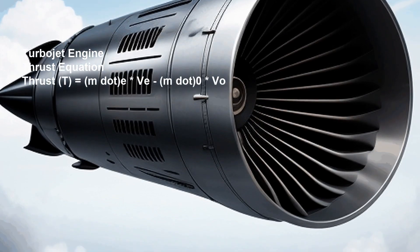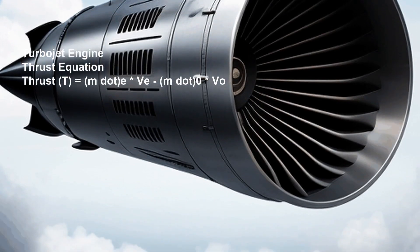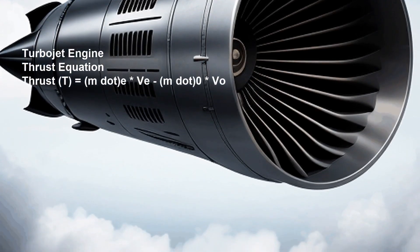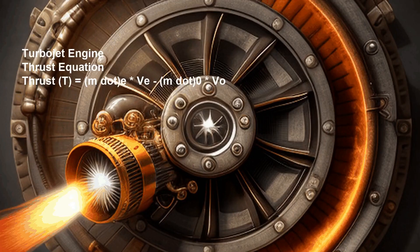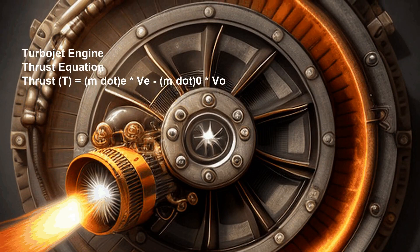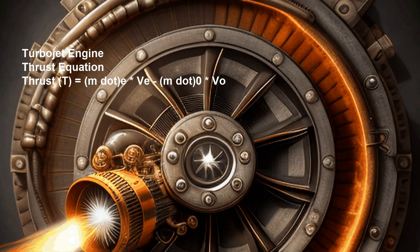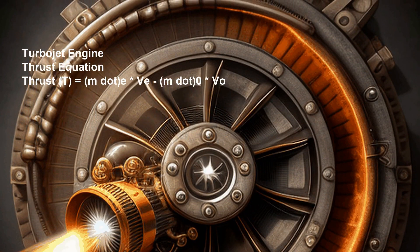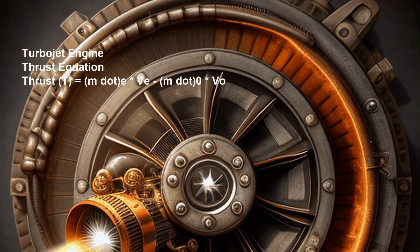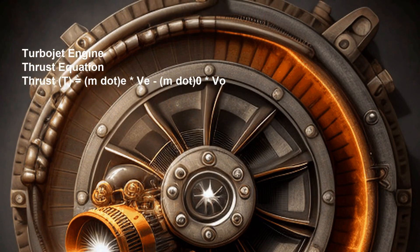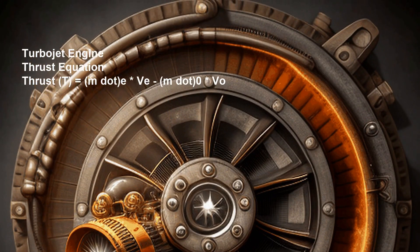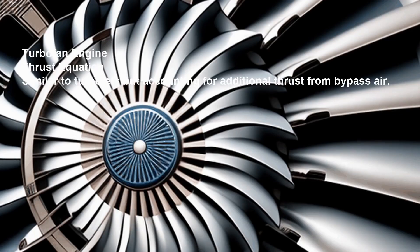Turbojet engines are the simplest type of jet engines, widely used in aircraft. They operate by drawing in air, compressing it, mixing it with fuel, igniting the mixture, and expelling high-speed exhaust gases to generate thrust.